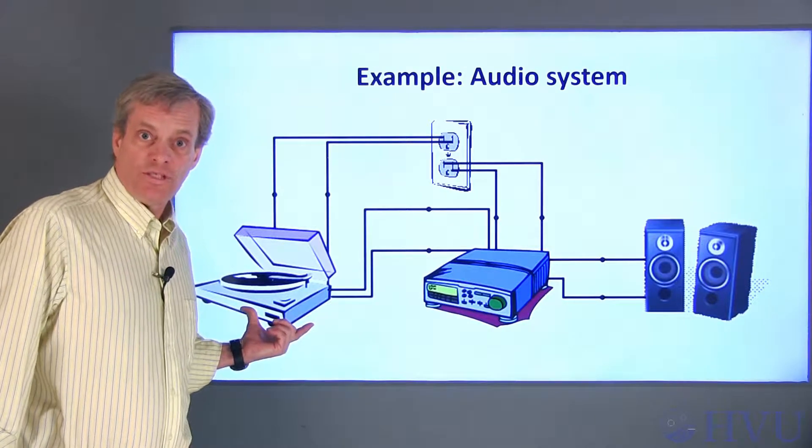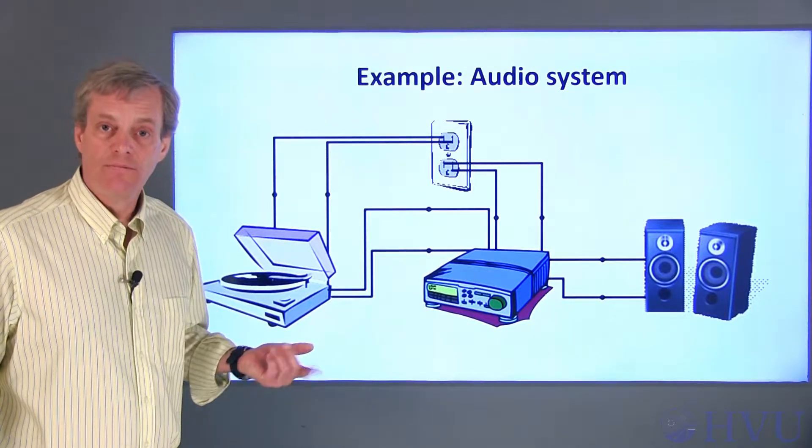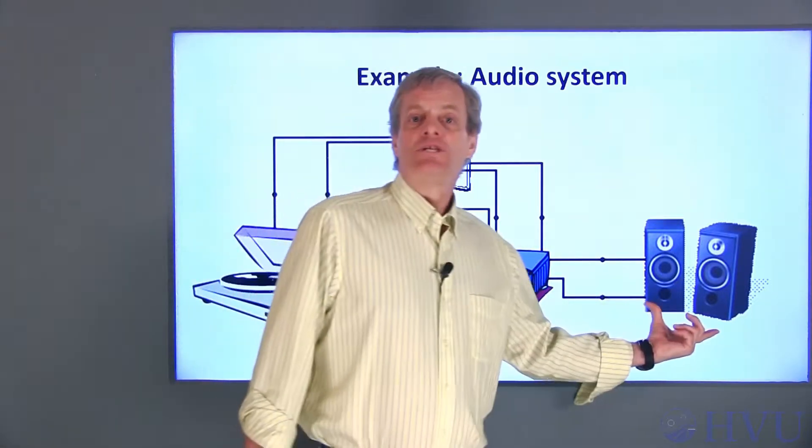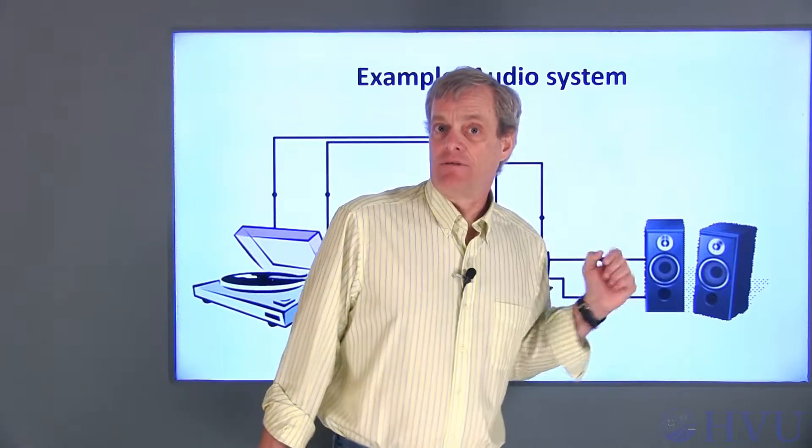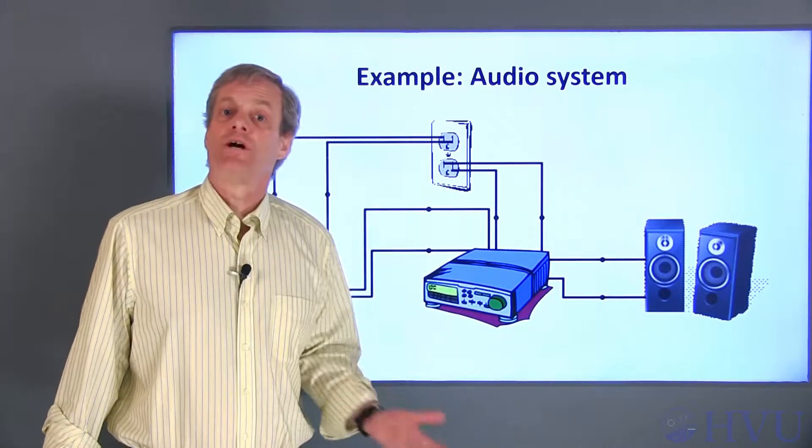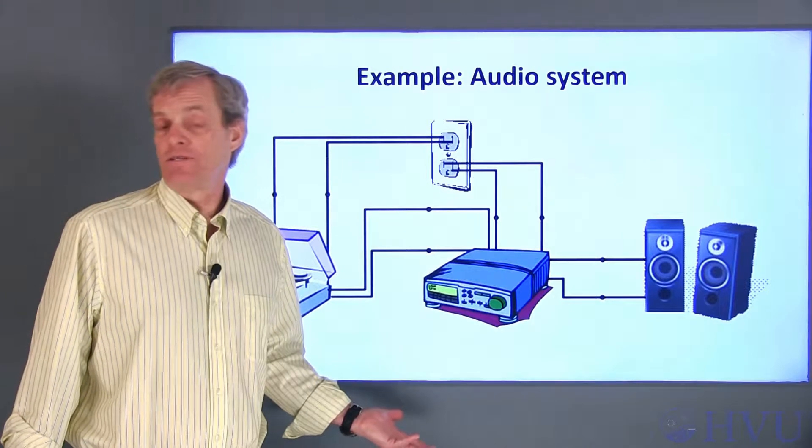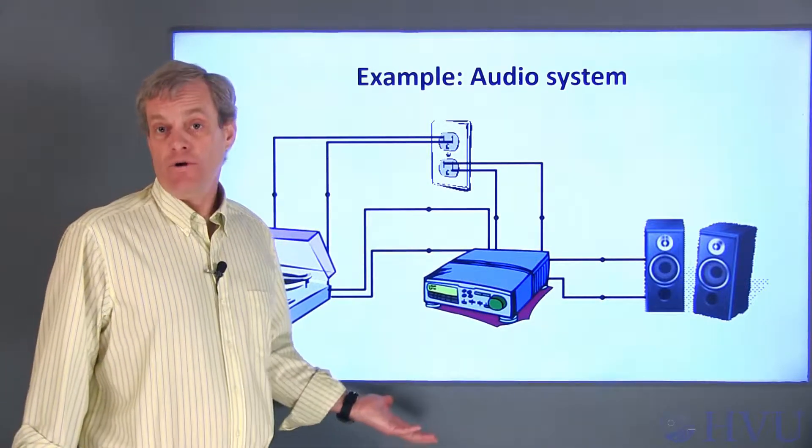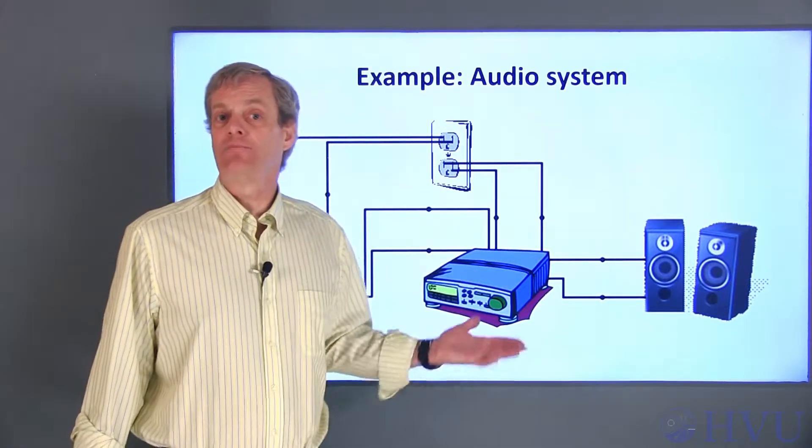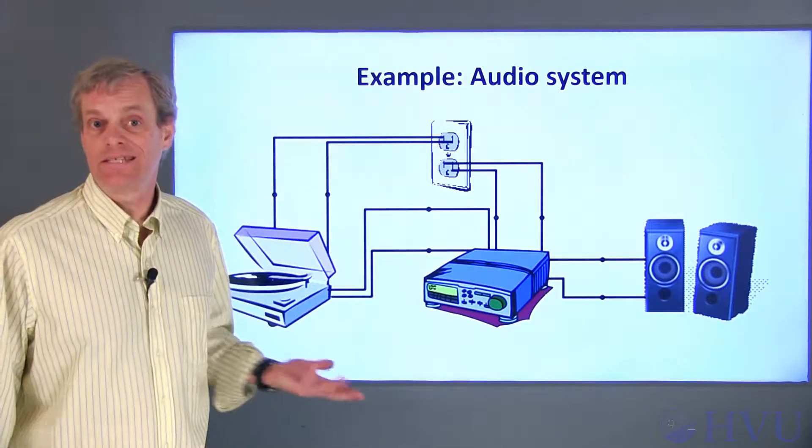We want to convert this voltage to sound through our speakers. Most speakers use an electromagnet to produce sound. Current flows through a coil, which causes a magnet to move back and forth as the current changes. The magnet is connected to a cone. As the cone moves, it creates pressure waves, which we hear as sound.